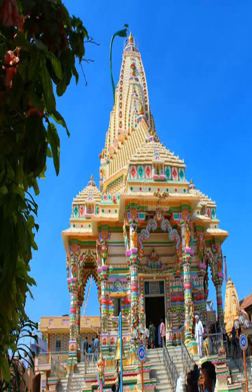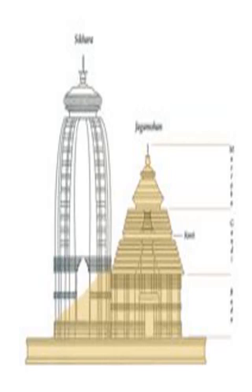It represents the triple knowledge by a unique plan that is based on astronomical numbers. Subhash Kak sees the temple form and its iconography to be a natural expansion of Vedic ideology related to recursion, change, and equivalence. In ancient Indian texts, a temple is a place for tirtha — pilgrimage. It is a sacred site whose ambience and design attempts to symbolically condense the ideal tenets of the Hindu way of life.